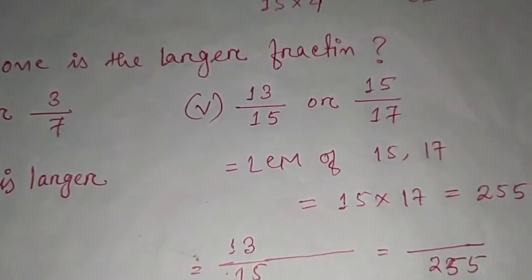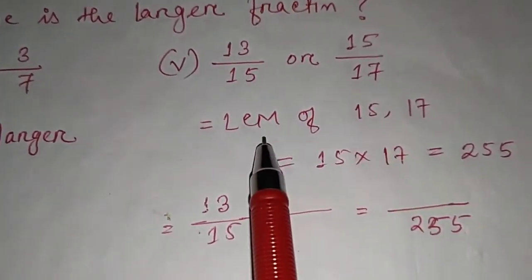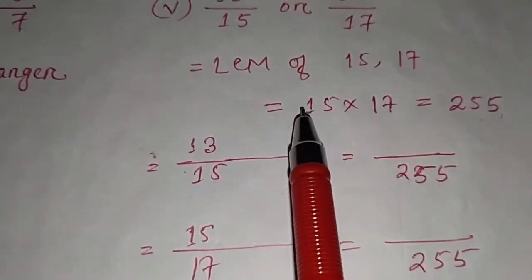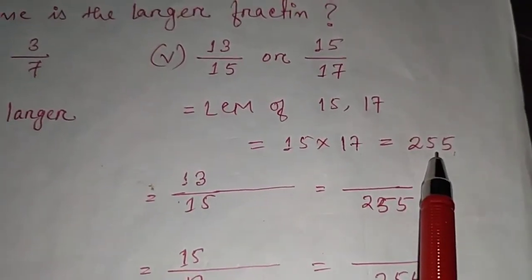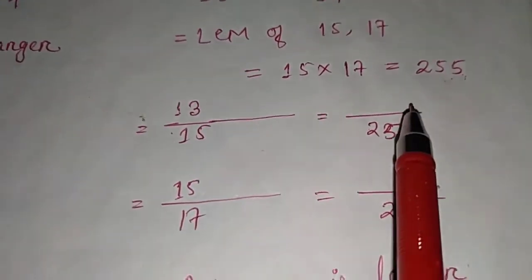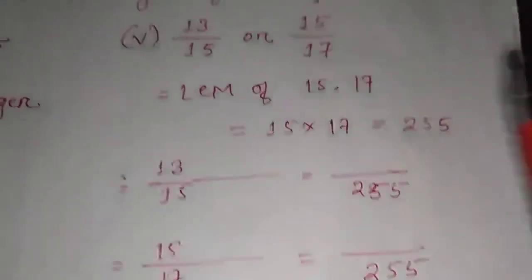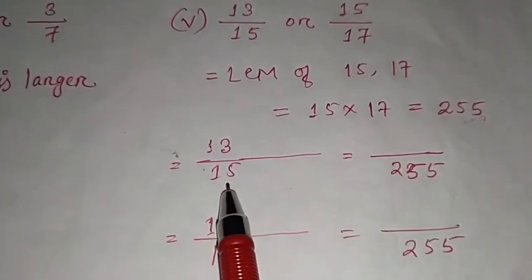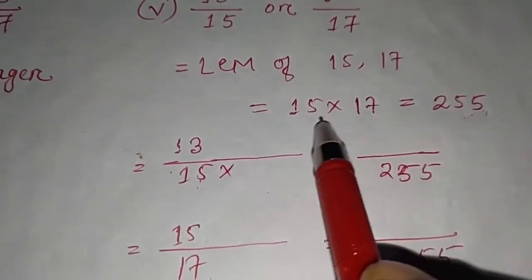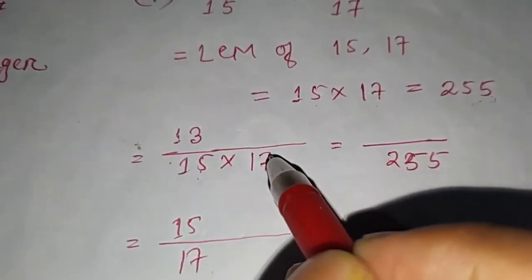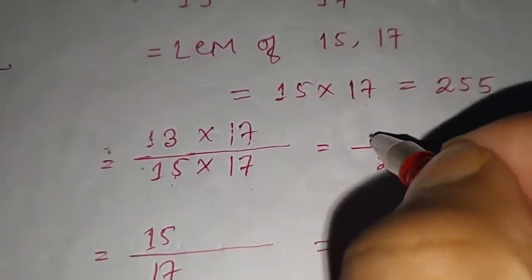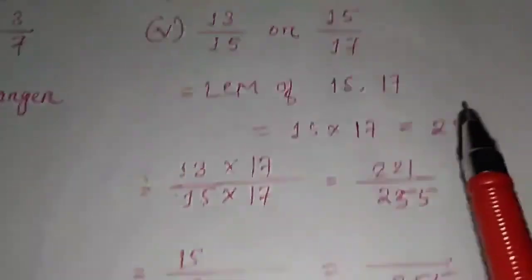Sub-question 5: compare 13/15 and 15/17. Denominators are different, so find LCM of 15 and 17. Since there are no common factors, LCM = 15 × 17 = 255. For 13/15: multiply by 17 to get denominator 255; numerator becomes 13 × 17 = 221.